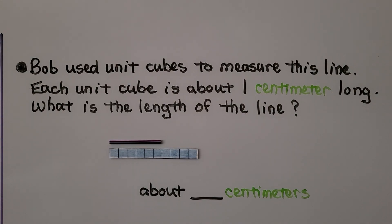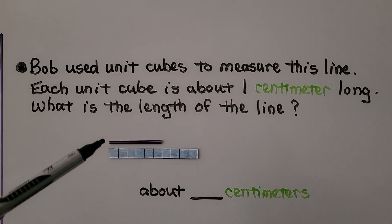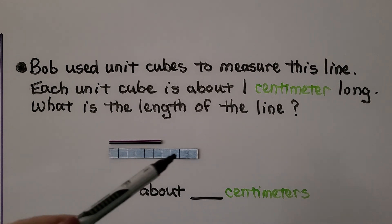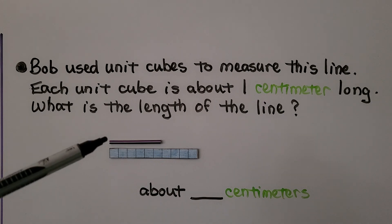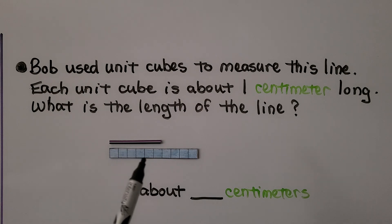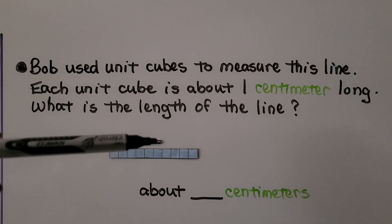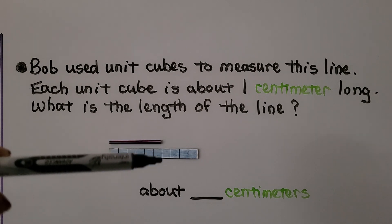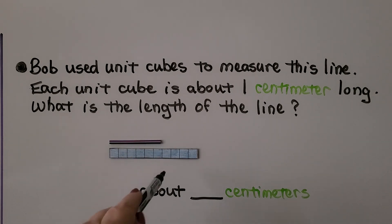Bob used unit cubes to measure this line. And each unit cube is about one centimeter, one centimeter long. So what is the length of this line? Well we've got all these unit cubes, all these centimeters. And what we do is we look at where the line ends. It ends right here. That means we should count the unit cubes up to here.